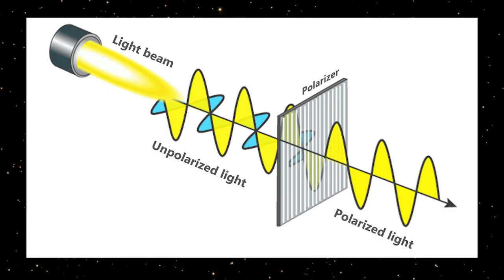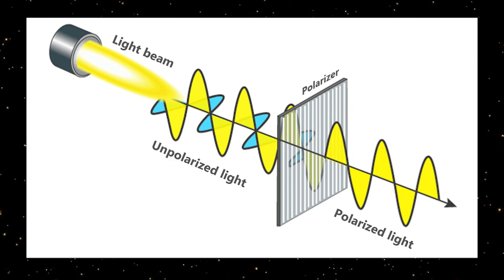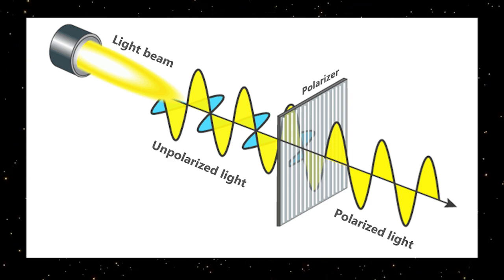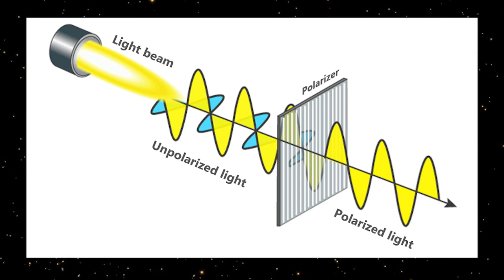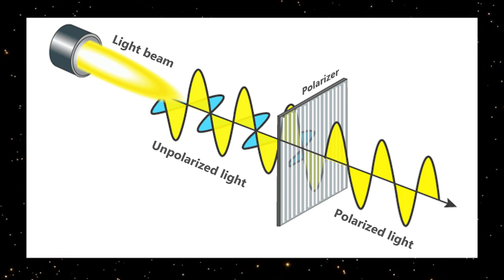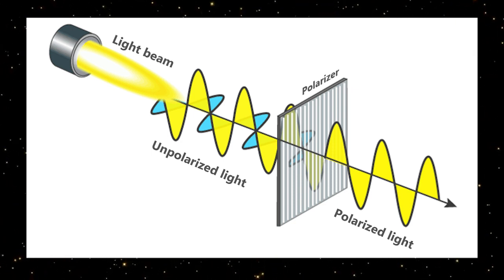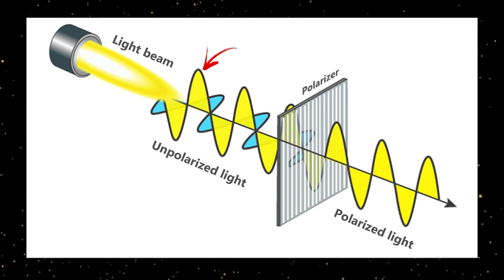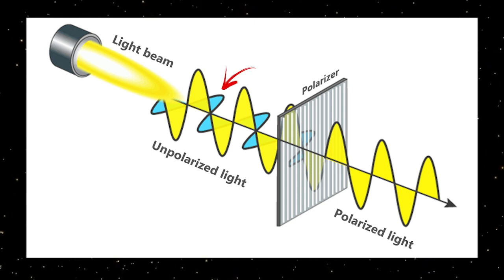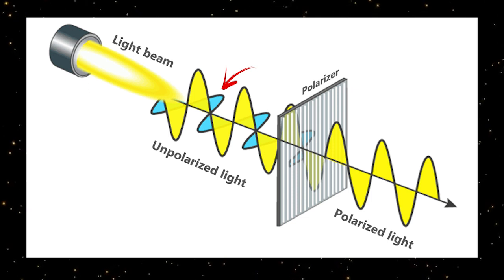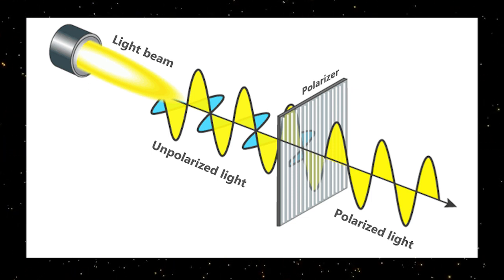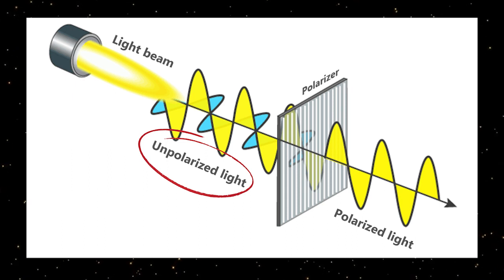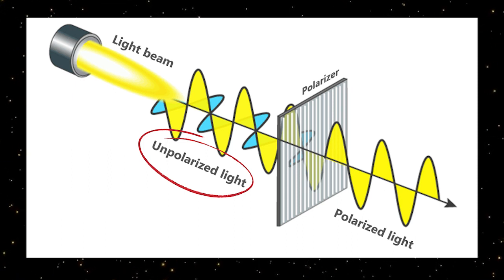This is a diagram of light being polarized. Light travels in waves just like how water moves through waves in the ocean. These light waves oscillate perpendicular to the direction they travel. As you can see in the picture, the yellow wave is oscillating in the vertical direction, while the blue wave is oscillating in the horizontal direction, perpendicular to the yellow wave. This light, which oscillates in multiple directions, is unpolarized.